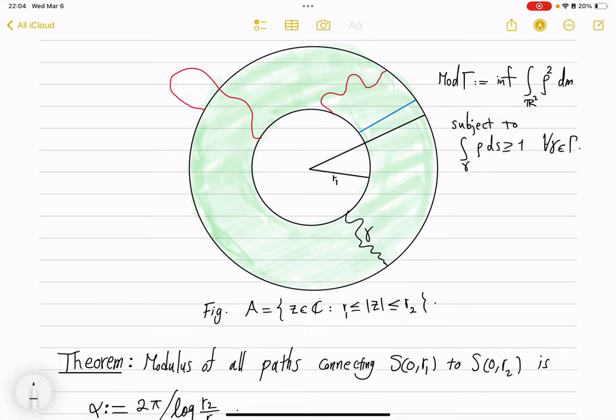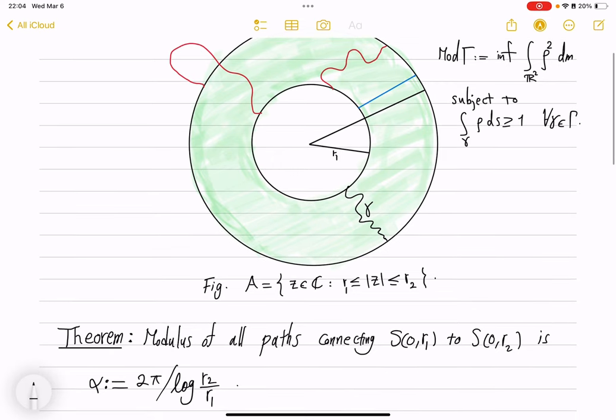Consider an annulus in the plane and let gamma be the family of all paths that connect the two boundary components of this annulus. One of the key facts about modulus in the plane is that this path family has modulus precisely equal to 2π divided by log of the outer radius over inner radius. In particular, the modulus depends only on the ratio of the inner and outer radius.